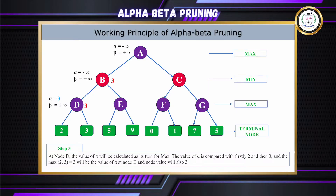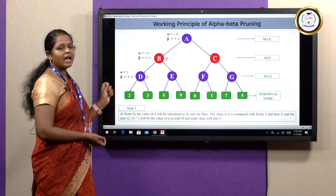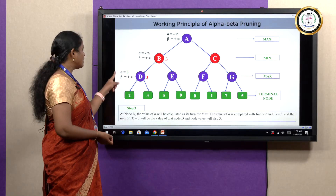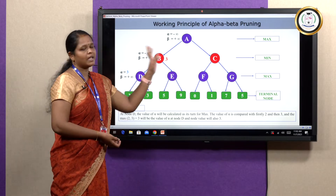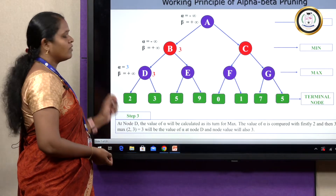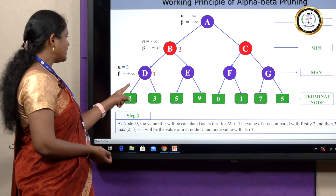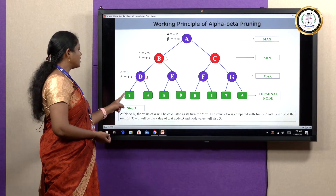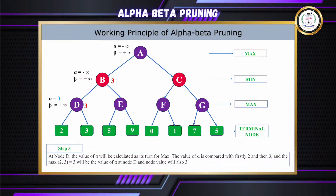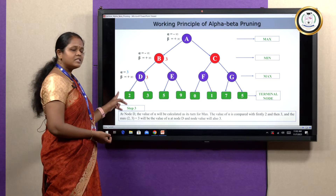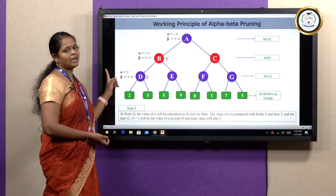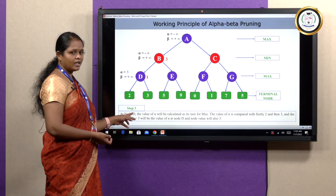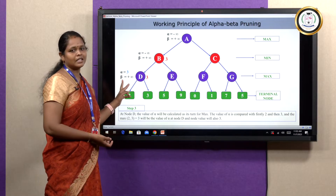At node D, which is at level 2 representing the max player, we update the alpha value. Node D has two children: left child value 2, right child value 3. First, compare minus infinity and 2 — obviously 2 is greater, so alpha is updated to 2. Then compare 2 and 3 — 3 is greater, so alpha is updated to 3. We then update node D's value to 3 since it is a max player level and we always choose the maximum value.